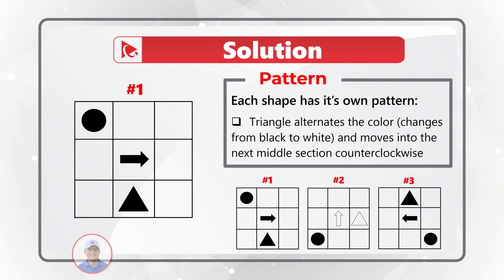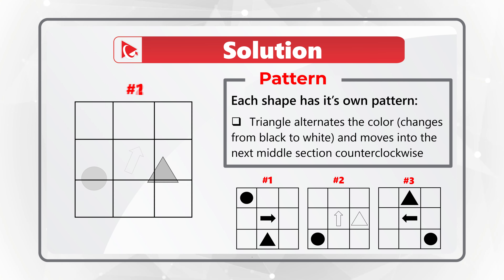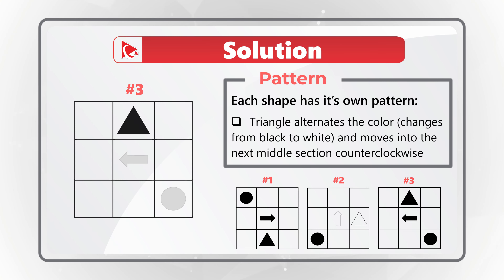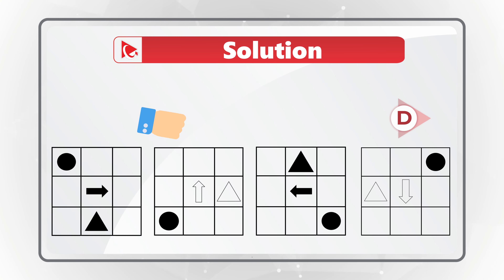The triangle alternates color, changing from black to white, and also moves into the next middle section counterclockwise. If you follow all of these patterns, you will realize that the answer is choice D.